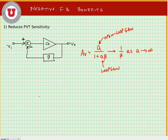Now remember that our beta is typically a ratio of resistors. And as a ratio, it's less sensitive to variation as well.